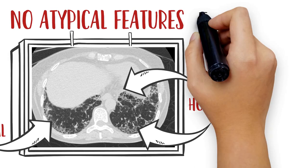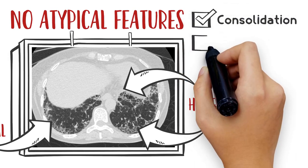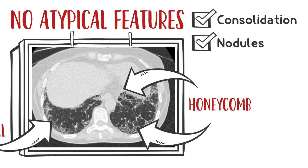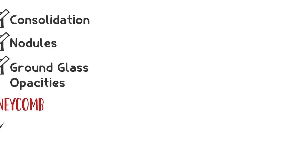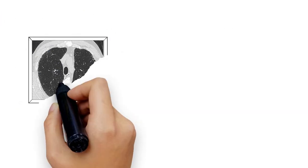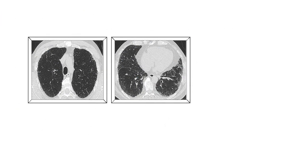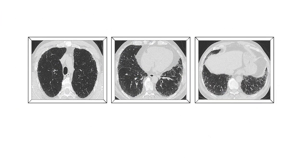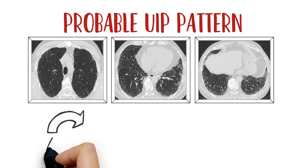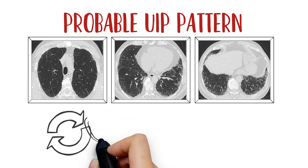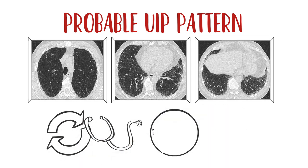Those features include consolidation, nodules, and significant ground glass opacity. We can typically categorize high-resolution CT scan patterns into probable UIP, indeterminate for UIP, suggestive of an alternative diagnosis, or confirming UIP.